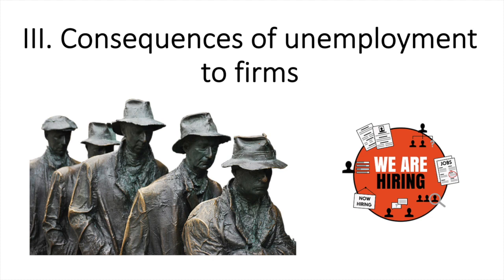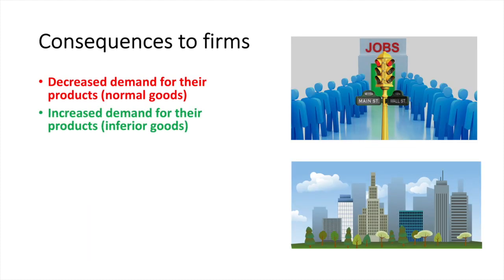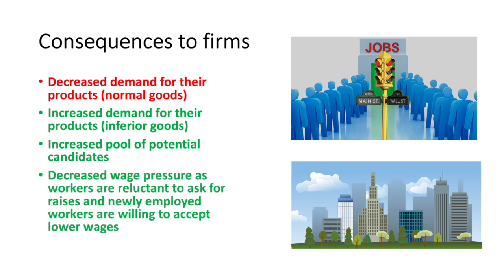Next up are the consequences to firms. The first two points may seem contradictory because the impact to firms depends on the kind of products they are selling. If they are selling normal goods, demand should fall. If they are selling inferior goods, they should see demand for their products rise. A firm operating in an environment with high unemployment will have a large pool of candidates to choose from, receiving higher than normal amounts of applications and a greater selection of potential employees. Additionally, in such economic conditions, they may be able to hire workers at lower wages compared to periods of high employment when job candidates have more options. Employees who already have jobs will also be less likely to ask for a raise in tough economic conditions.